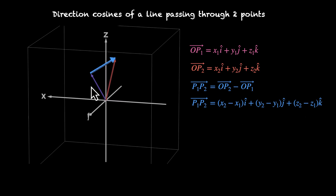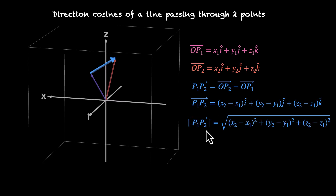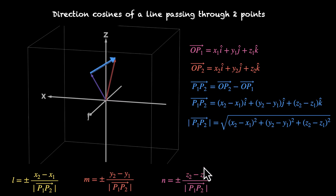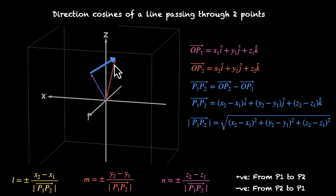We can take the magnitude |P1P2| = √((x₂−x₁)² + (y₂−y₁)² + (z₂−z₁)²). For direction cosines, L = ±(x₂−x₁)/|P1P2|, M = ±(y₂−y₁)/|P1P2|, N = ±(z₂−z₁)/|P1P2|. The positive sign means we're headed from P1 towards P2; the negative sign means we're moving from P2 towards P1.